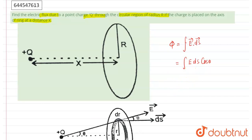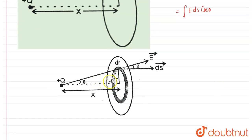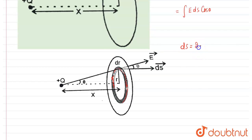So in the diagram, we have taken an element. That element has area ds. It is a circular ring element, and the radius of that element is r and the thickness of that ring is dr. So in that condition, the area of that element ds equals 2πr dr.